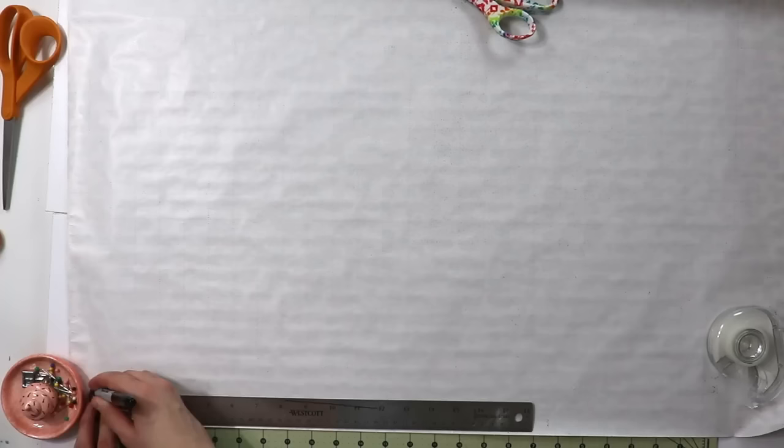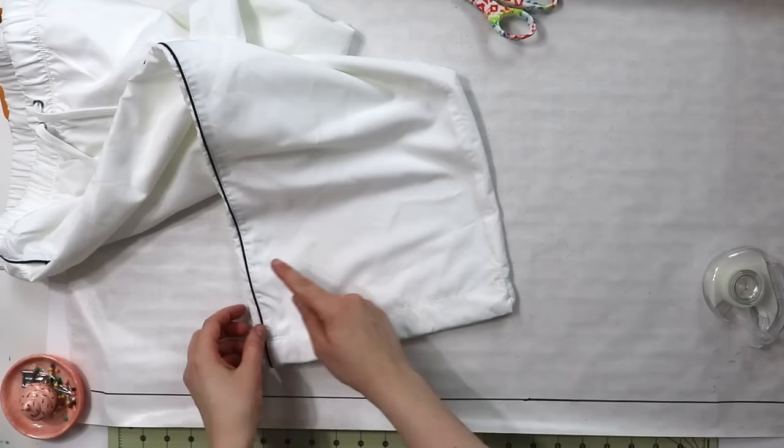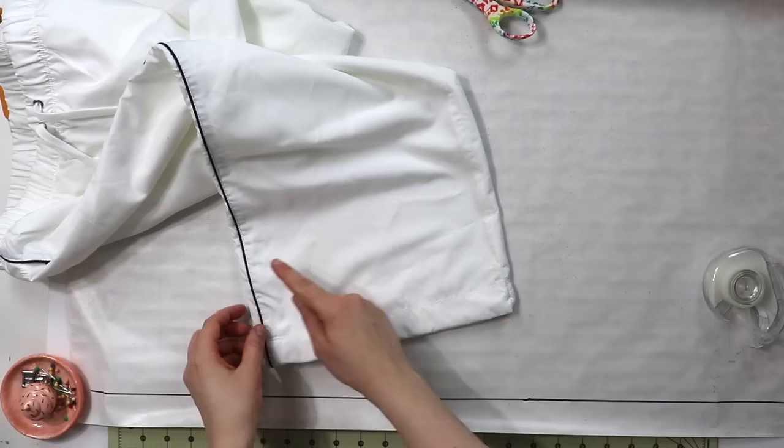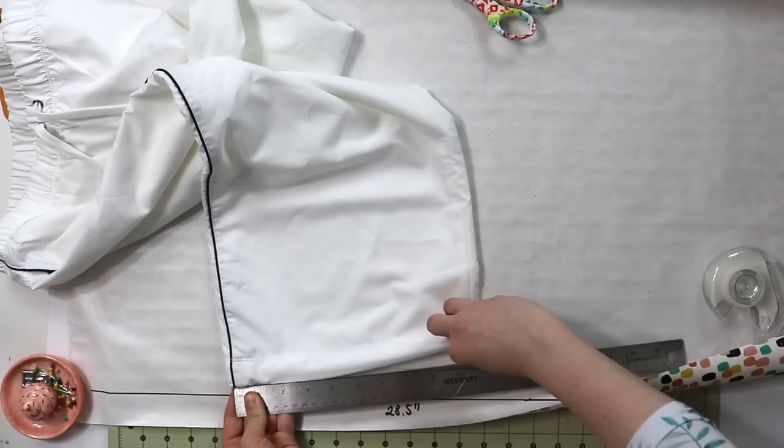Now the side seam of my pants is going to be 28 and a half inches long and while we're at it we're also going to measure the hem of my front piece in exactly the same manner as we did for the side seam. And once you have that measurement go ahead and put that on your pattern paper as well.